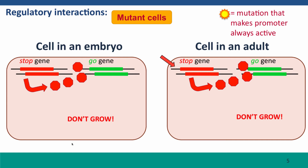The stop gene has shut down its growth. This cell will probably die and won't contribute to the adult phenotype. The same stop mutation in an adult cell isn't going to have any effect, because the adult cell is already making lots of stop protein. So a mutation that makes the stop promoter constitutively active will just cause what was already happening to happen — the go gene won't be expressed and the cell will not grow. The phenotype will be normal.